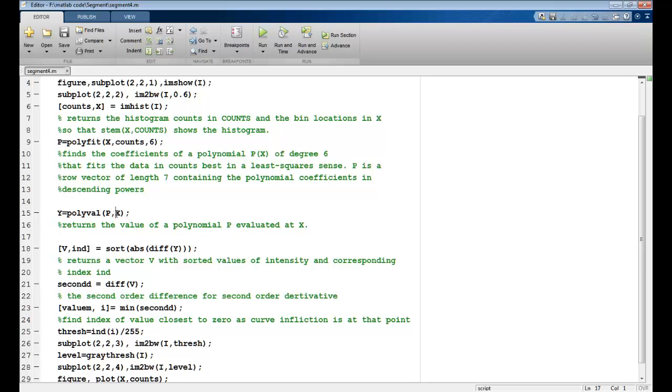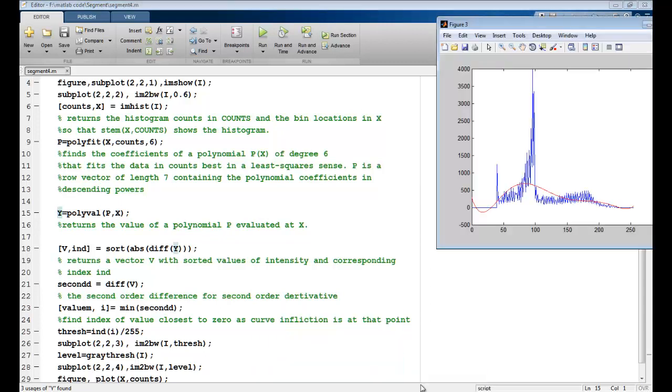Y is evaluating this polynomial value for each and every x. So according to the bin specified right from 0 to 255, what is the number of pixels that you would expect this polynomial to have?